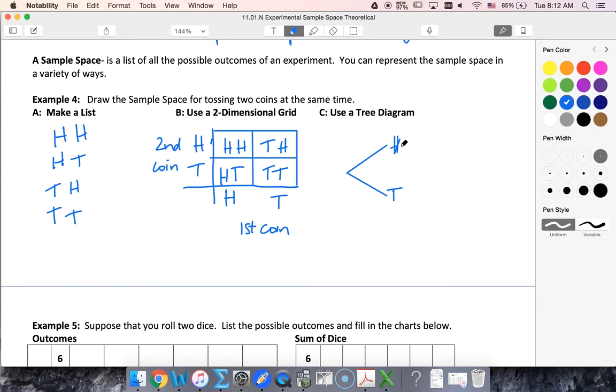For my second coin, after I get heads with the first coin I could get heads or tails with the second coin. If I get tails on the first coin I could still get heads or tails on the second coin.